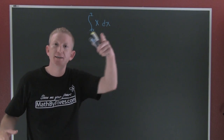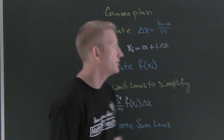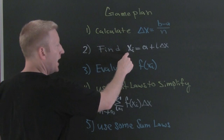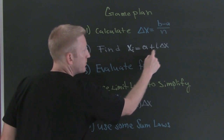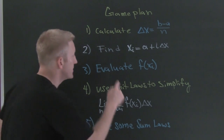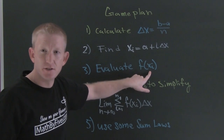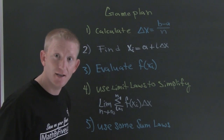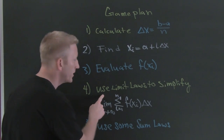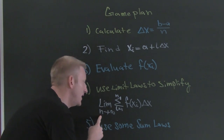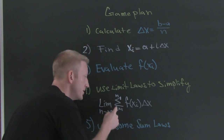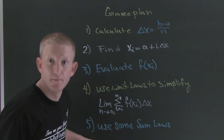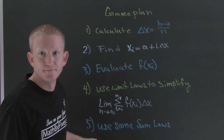Now that we have that definition, we need a game plan. First, we're going to calculate delta x — that's b minus a over n. Then we're going to find xi, which is your general x: a plus i times delta x. Then we're going to evaluate f of xi. After we find that, we're going to stick it into our summation — chunking it makes it easier. Then we're going to use our limit laws to simplify, running the limit as n goes to infinity of the summation from i equals 1 to n. After that, we're going to use sum formulas to finish.